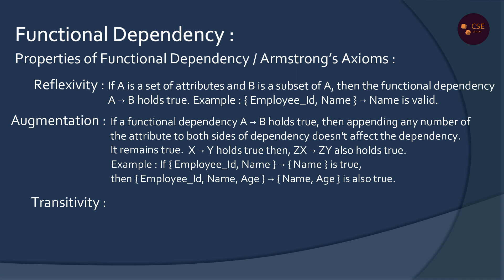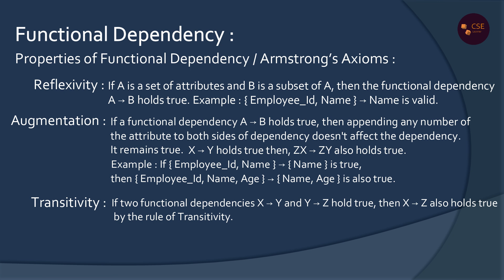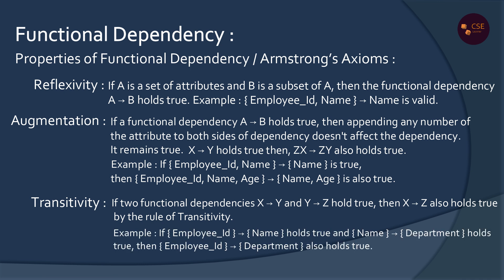This is the Transitivity property. The Transitivity property states: if X determines Y and Y determines Z, then X determines Z. For example, Employee ID determines Name, and Name determines Department is true. Therefore, Employee ID determines Department is true. This is Transitivity.